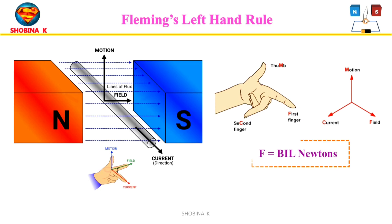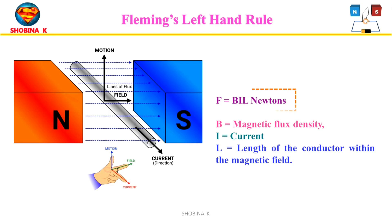Fleming's left hand rule gives the direction of rotation of the motor. It states that if the index finger, middle finger, and thumb of the left hand are mutually perpendicular to each other, the index finger represents the direction of the magnetic field, the middle finger indicates the direction of current, and the thumb represents the direction of force experienced by the shaft of the DC motor. The force is given by F = BIL newtons, where B is magnetic flux density, I is current, and L is the length of the conductor within the magnetic field.